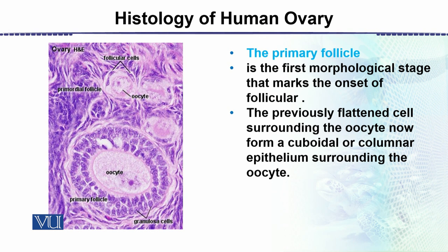The primary follicle then matures and then becomes a secondary follicle. The primary follicle is the first morphological stage that marks the onset of follicular development. The previously flattened cells surrounding the oocyte now form a cuboidal or columnar epithelium surrounding the oocyte — so it develops from flattened cells to cuboidal and then columnar.